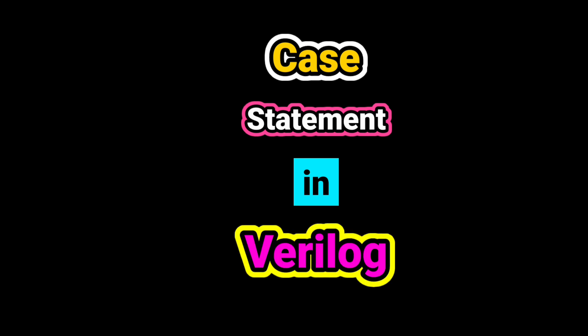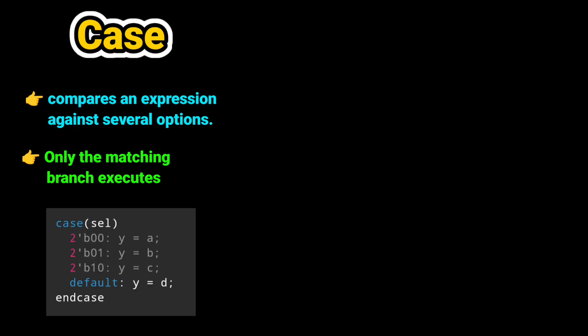In Verilog, the case statement is used for decision making. It's similar to an if-else ladder, but much cleaner when you have multiple choices. The first one is Basic Case. The normal case compares an expression against several options. Only the matching branch executes. This is the example of case. Here, sel decides which input goes to Y. Always use default to avoid latch inference.